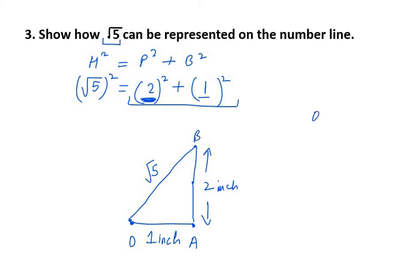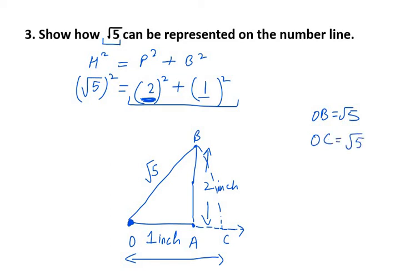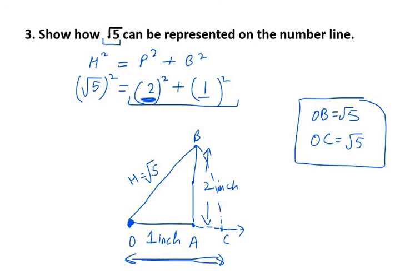OB is your √5. There is another method: from point O, draw an arc from point B onto the number line. The point where it meets the number line, call it C — the length OC will also be √5. So you get two representations of √5: OB as the hypotenuse, and OC using the arc with compass. Thank you for watching Exercise 1.2. I will be uploading Exercise 1.3 in the next video.